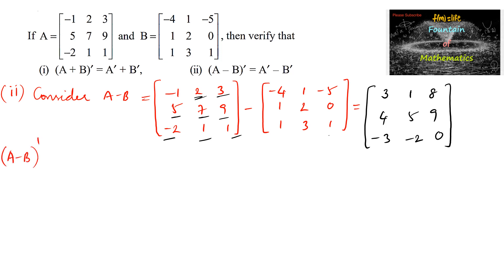Finding (A−B) transpose by interchanging rows and columns: the first row becomes the first column: 3, 1, 8; the second row becomes the second column: 4, 5, 9; and the third row becomes the third column: −3, −2, 0. So this is (A−B) transpose.